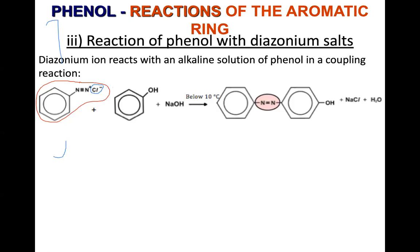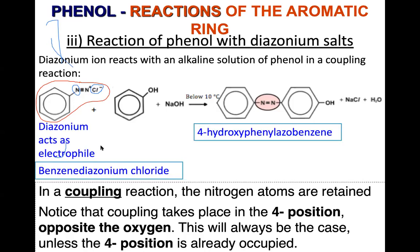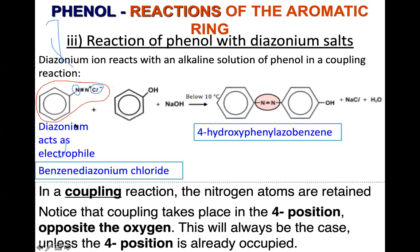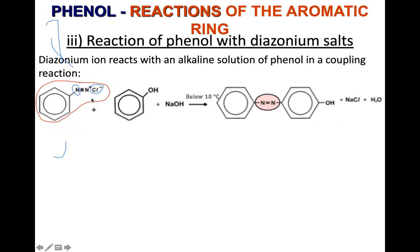Strictly speaking, the positive charge should be on the nitrogen that has four bonds, because nitrogen is in group 15 and normally forms three bonds — with a positive charge when it forms four. The positive charge shown on the structure belongs to the whole diazonium cation. This is benzene diazonium chloride — a salt made up of cations and anions.